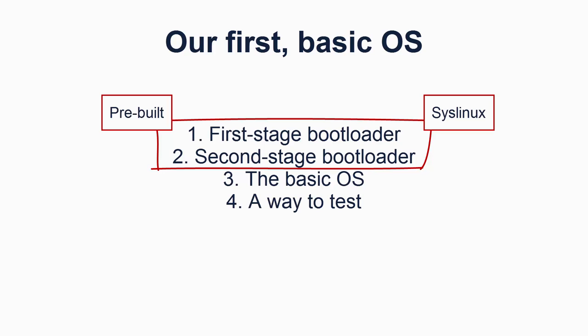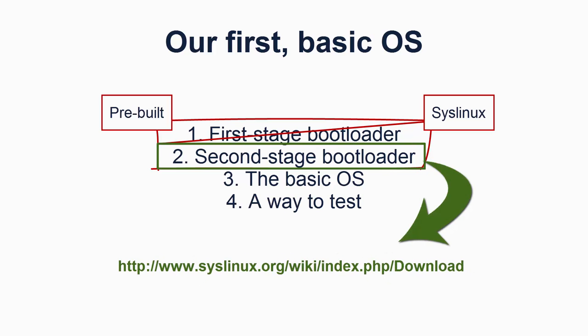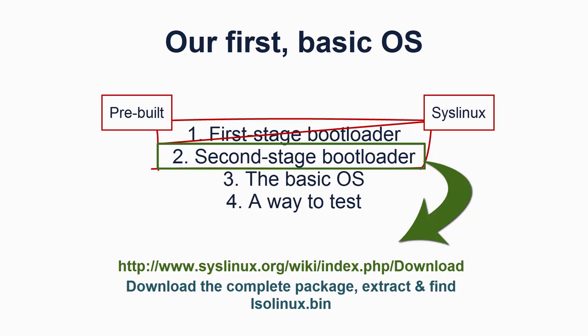Despite its name, SysLinux doesn't really have any ties to the Linux operating system, so don't become confused by this. There is existing software that will handle the first stage bootloader, and we will discuss some peculiarities later when we use a virtual machine. The second stage bootloader we will need to download — I have provided a link in the description. What we need is ISO Linux because we will be running our operating system from a virtual disk known as an ISO file, which comes from the name of the standard used to format the file: ISO 9660.